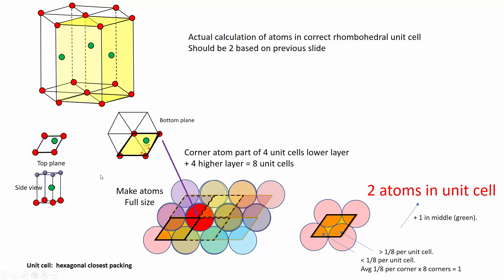That means we have one atom internal to the unit cell, and eight corner atoms times one-eighth equals one, for a total of two atoms in the unit cell. Either way we look at it, the hexagonal closest-packing unit cell — the rhombohedron — has two atoms per unit cell.